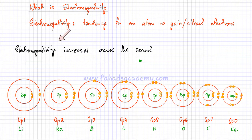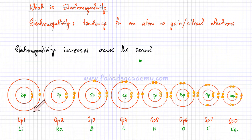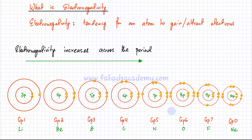If you look at the periodic table, electronegativity is going to increase across the period. As you move to the right, group 7 elements would have a higher tendency to gain electrons. Group 1 elements would have a higher tendency to not gain electrons — they would actually be losing electrons. So different elements have a different tendency to gain or lose electrons.